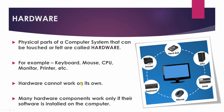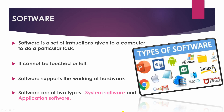Hardware cannot work on its own. Many hardware components work only if their software is installed on the computer. Now what is software? Software is a set of instructions given to a computer to do a particular task. It cannot be touched or felt. Software supports the working of hardware.